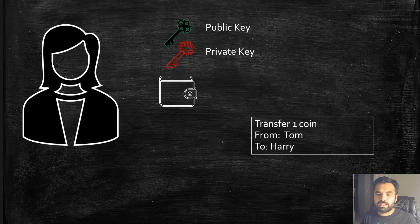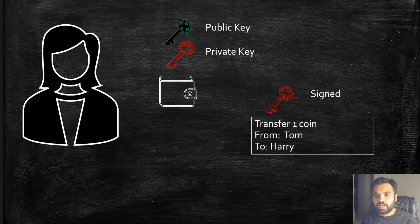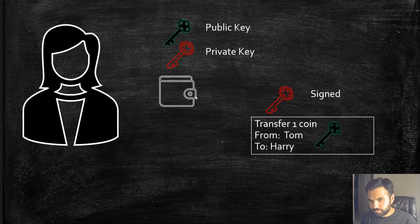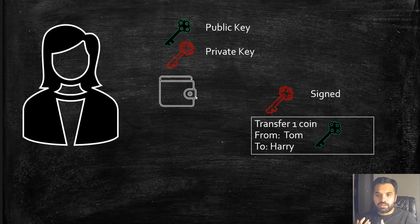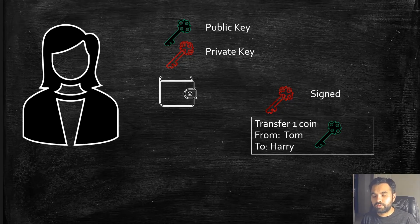Let's say Tom wants to send one coin to Harry. Tom will create a block — 'transfer one coin from Tom to Harry' — and then this block will be signed with Tom's private key. When it is signed with the private key, the public key is also attached to that block. When Harry receives this block, he can use the public key to verify whether the signature was actually from Tom or someone else, because the private key and public key are mathematically connected. This is why we use the public key and private key in this fashion.